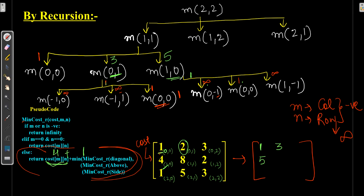Taking minimum of 1, 3, and 5 gives 1. For calculating M(1,1), we get minimum 1 and cost of (1,1) is 8. So 8 + 1 = 9 — the resulting value for element (1,1) is 9. Similarly, we will calculate for (1,2) and (2,1).